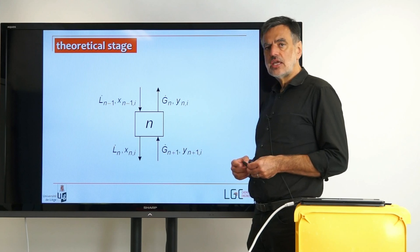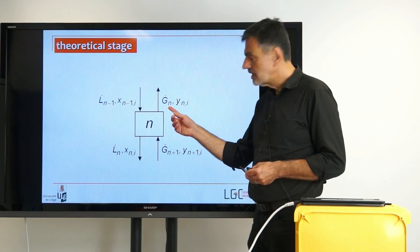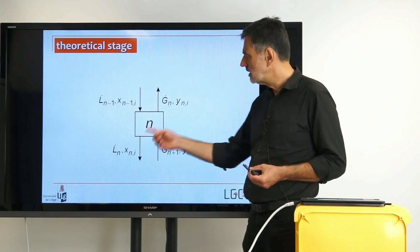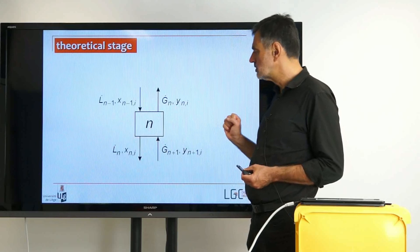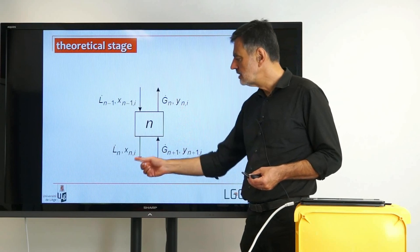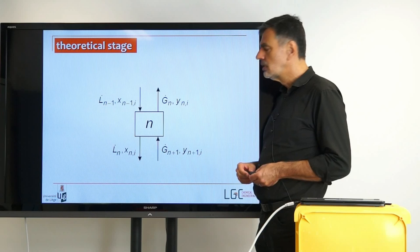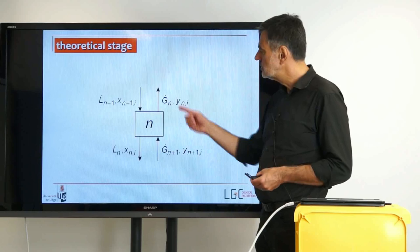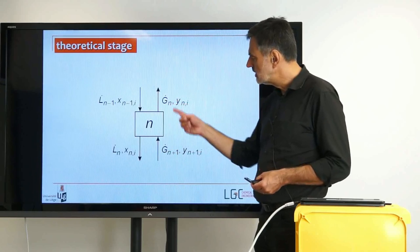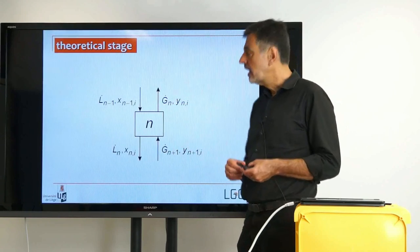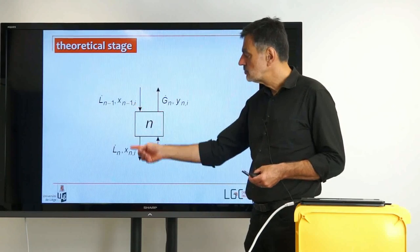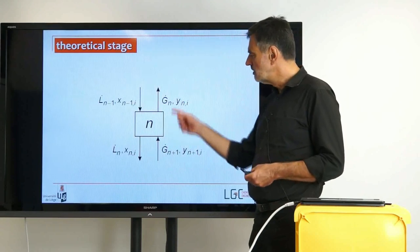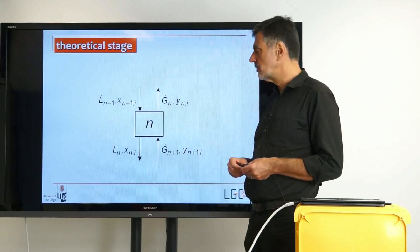The flow rates that are leaving that stage carry the index of that stage — that's our nomenclature — so that is G-dot n and L-dot n, again with the corresponding compositions y_(n,i) and x_(n,i). And if you remember, equimolar evaporation and condensation meant that G-dot n and G-dot n+1 are identical, and that L-dot n-1 and L-dot n are identical, so we could skip the indices for the flow rates, not for the compositions, but for the flow rates.